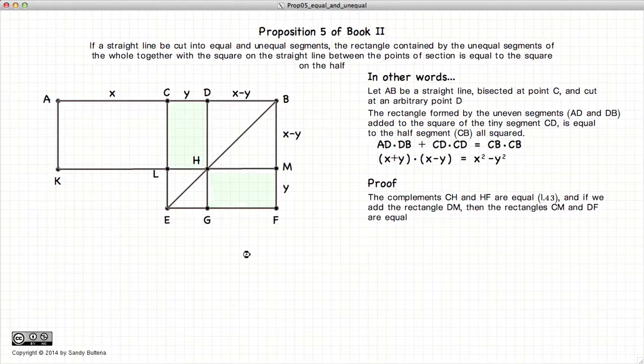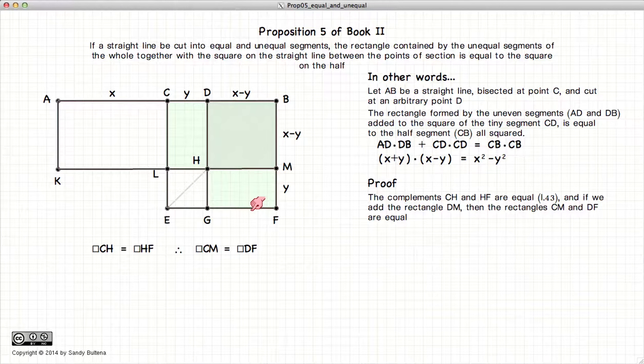So the first thing we want to look at is the complements CH and HF. This being a parallelogram, these two complements are equal according to Proposition 43. So CH is equal to HF. If we add the square DB, then we have CM is equal to DF. We've taken two things that are equal,